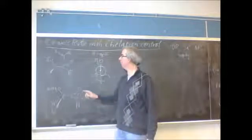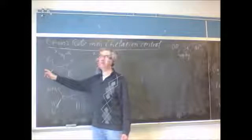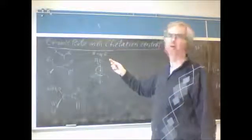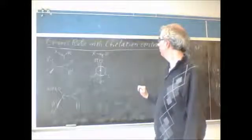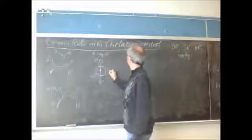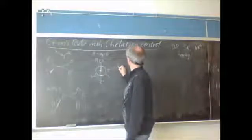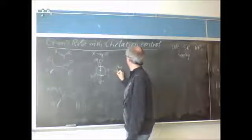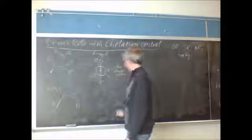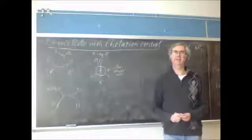We only have two other groups, and so instead of having large, medium, small like I had for the regular one, I have just shown large and small. And as you would expect, the nucleophile comes in on the less-hindered side.